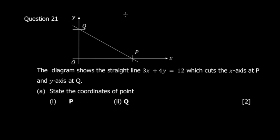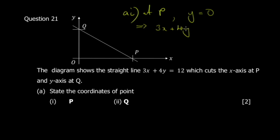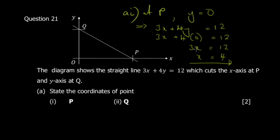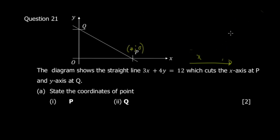At point P, y = 0 because P is on the x-axis. All points on the x-axis have y-ordinate equal to zero. So substitute y = 0 into 3x + 4y = 12: you get 3x = 12, then x = 4. Therefore P is (4, 0).